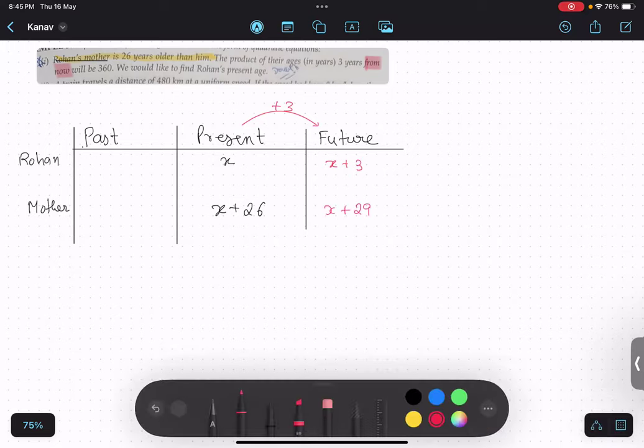Now we will go according to the question. The question is saying the product. So let me just change the color. This thing is product. Can you see? Product is 360. What is the product? Future product. This product. Is that thing clear? Yes.